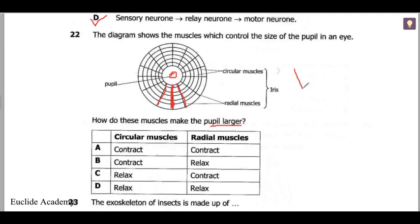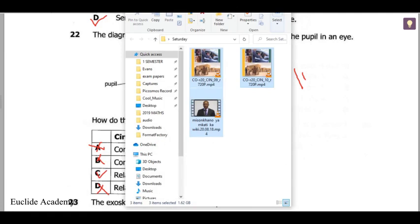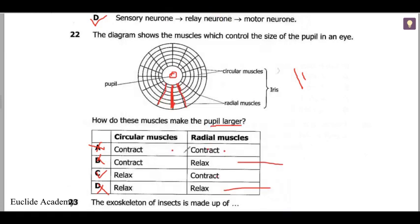The reasoning is that the radial muscles contracting pulls the ends together so the hole becomes bigger. So radial contracts and circular relaxes. Any option showing both contracting is wrong — so B and D are eliminated, which leaves us with C as the correct answer.